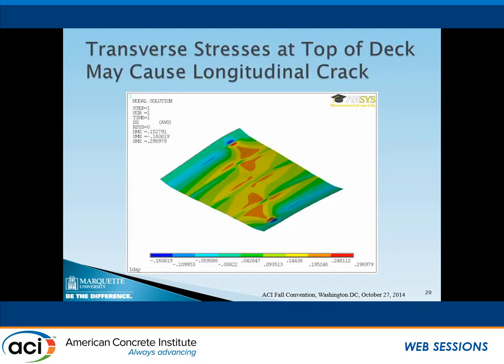This diagram shows the transverse stress on the top of the deck. If large enough, it may cause longitudinal cracking. The magnitude of this stress is much smaller than the longitudinal stress, so there is a lower chance of longitudinal cracking due to drying shrinkage alone. However, if combined with other parameters such as traffic load-induced stress or temperature load-induced stress, that may accelerate cracking and cause longitudinal cracks.